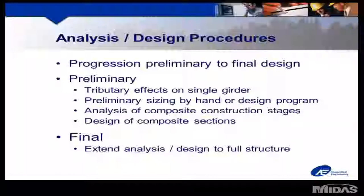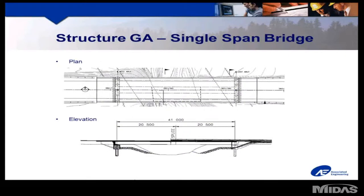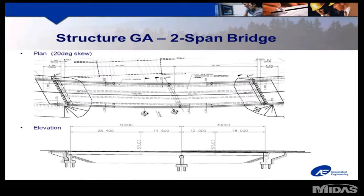I will briefly discuss some procedures showing the progression from preliminary to final design. For preliminary design, we initially consider a single girder, starting with the tributary effects onto a single girder. From that we can do the preliminary sizing by hand or design program. We need to analyze the composite section stages and consider the addition of all the effects before we can design the composite section. For the final design, the preliminary work is simply extended to the full structure. Whether our structure is an uncomplicated square single span bridge or a more complex multi-span bridge, possibly with curved alignment or skew supports, we can simplify our design by building up our understanding of the structure in stages.